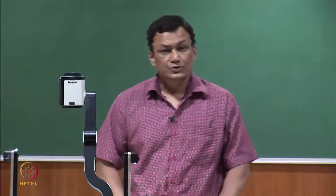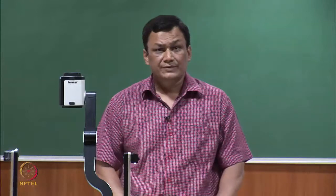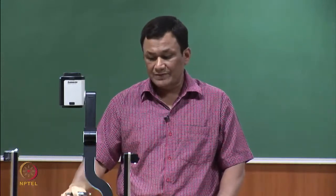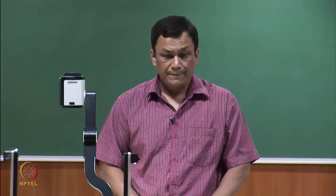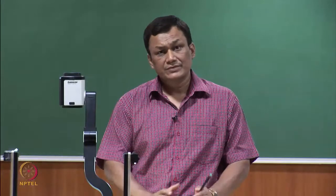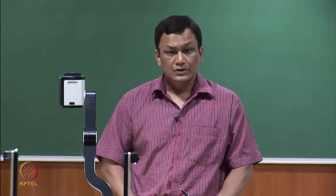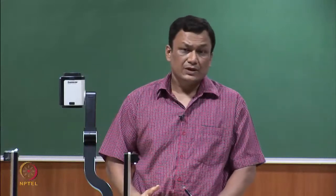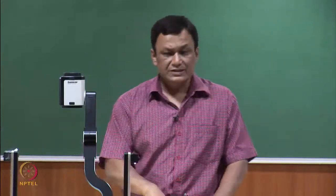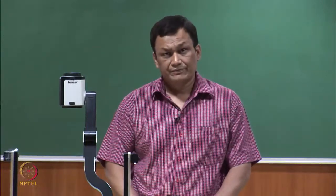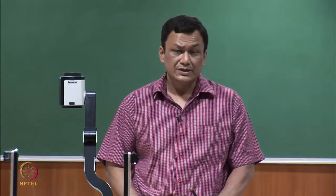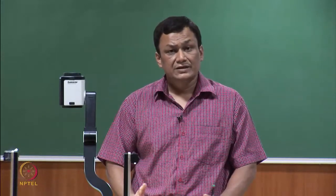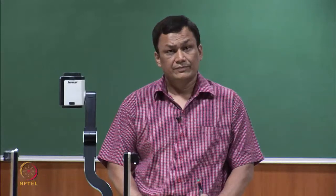It is also possible to interpret packing density in areal terms — that is, the ratio of area occupied by fibres to the area of the yarn. Packing density is a dimensionless quantity. Theoretically, it varies from 0 to 1. Suppose if we say the packing density of a yarn is 0.5, we interpret that 50 percent of the volume of this yarn is occupied by fibre and the rest 50 percent is occupied by air.